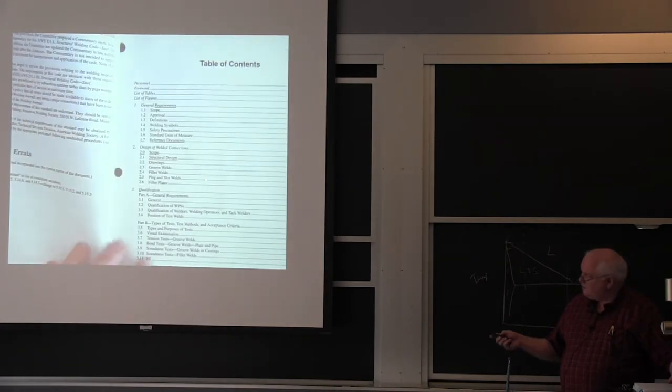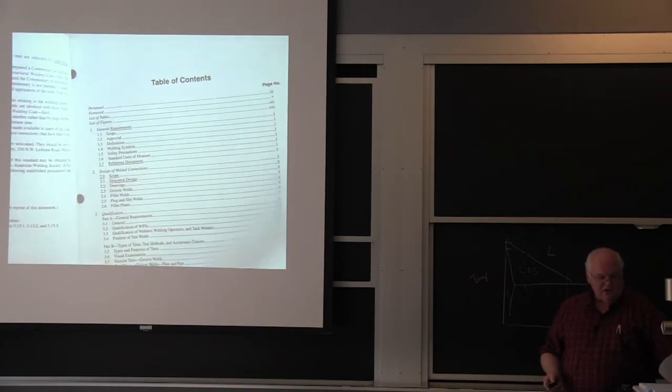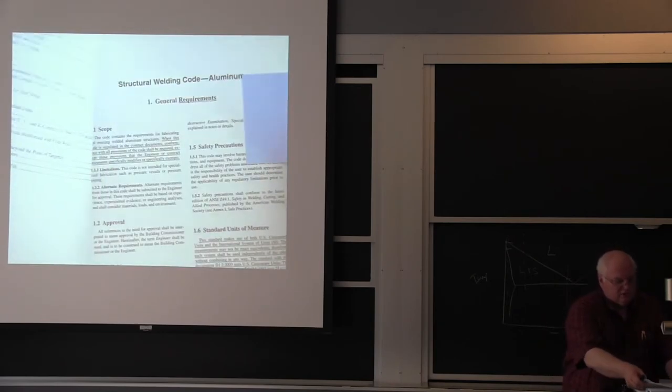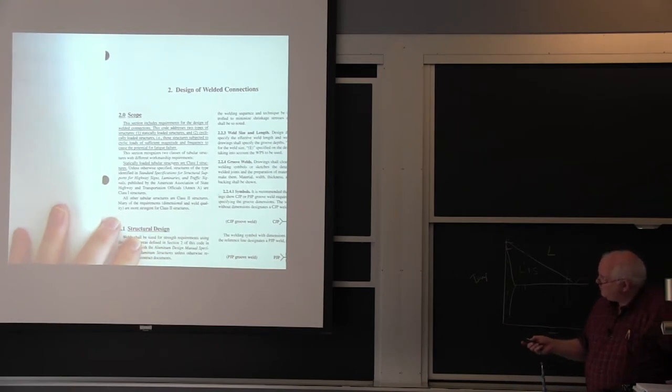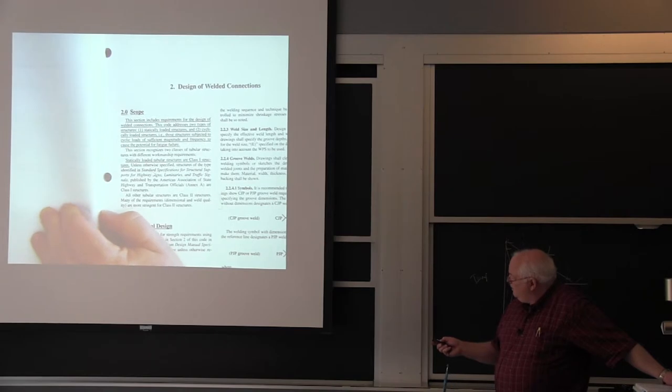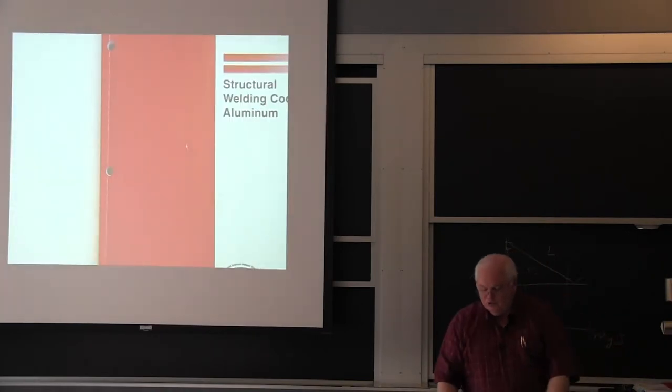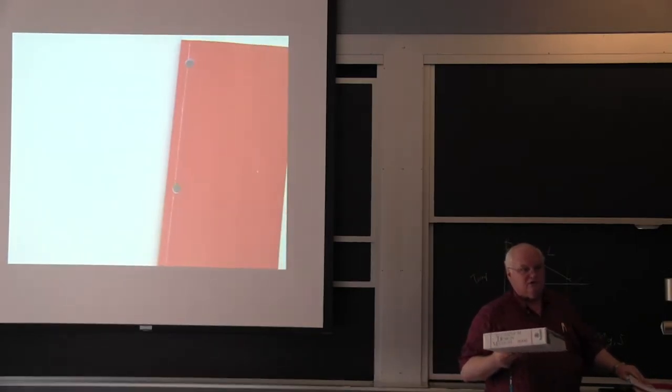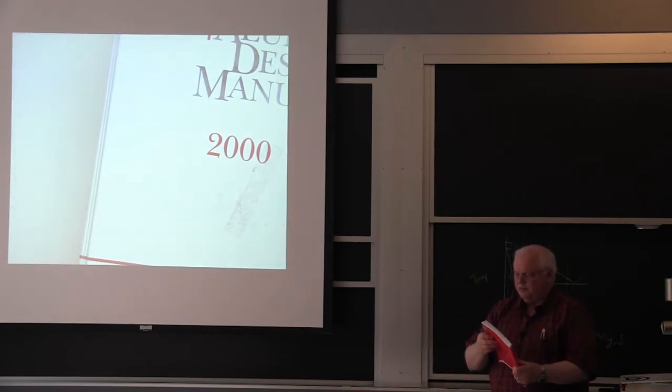So it says number one is always general requirements of the code, design of welded connections. And it will give you qualification of the welders. And then you go on to other things like inspection and welding and stuff. But design of welded connections. Well, there's only three pages on design of welded connections. Why is that? So if we go to that, it should show me. Here's the scope of design of welded connections. And it's going to tell me somewhere in here to go to, I'm not seeing it right now. Basically, I'm not finding it right now. But it's going to tell me to go to the aluminum design manual, which is a little thicker than three pages.